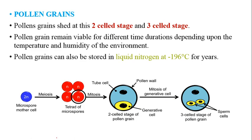The microspore mother cell, which is diploid, will undergo meiosis and form a microspore tetrad having haploid cells. One of the microspores will undergo mitosis and form a vegetative cell and a generative cell. The generative cell will undergo mitosis again and will form two male gametes, which are the sperm cells. Some pollen grains are shed at the two-cell stage and some are shed at the three-cell stage. If shed at the two-cell stage, mitosis will occur when it germinates and forms a pollen tube through the style, at which time it will form the male gametes.